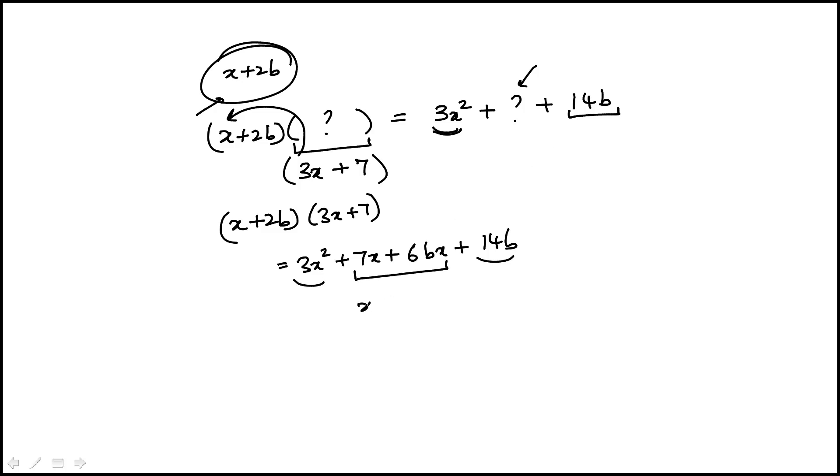Now if I take out the x, the coefficient of x is 7 plus 6b. My choices for that middle term are 7, 28, 42, and 49.